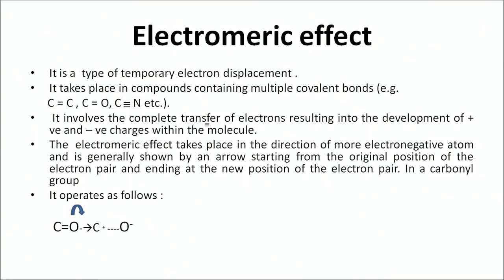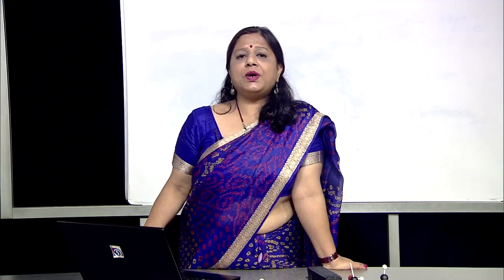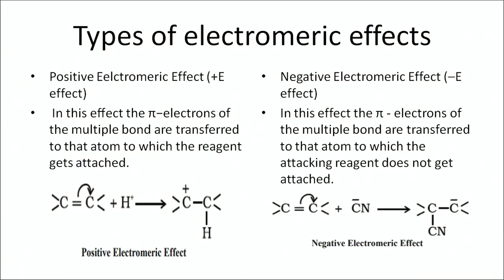The electromeric effect is a type of temporary electronic effect. It takes place in compounds containing multiple bonds like C=O, C=C, etc. In the molecule C=O, oxygen being electronegative pulls the electrons towards itself, becoming negatively charged, and carbon becomes positively charged. There are two types: positive electromeric effect and negative electromeric effect. In the positive type, one carbon attracts the pi electrons and becomes negatively charged; if an electrophile is added, it attacks the negative carbon. In the negative electromeric effect, the pi electrons of the multiple bond are transferred to the atom to which the attacking reagent does not attack. For example, when a nucleophile like CN⁻ is added, it goes to the positively charged carbon, since it cannot go to the negatively charged carbon due to repulsion.